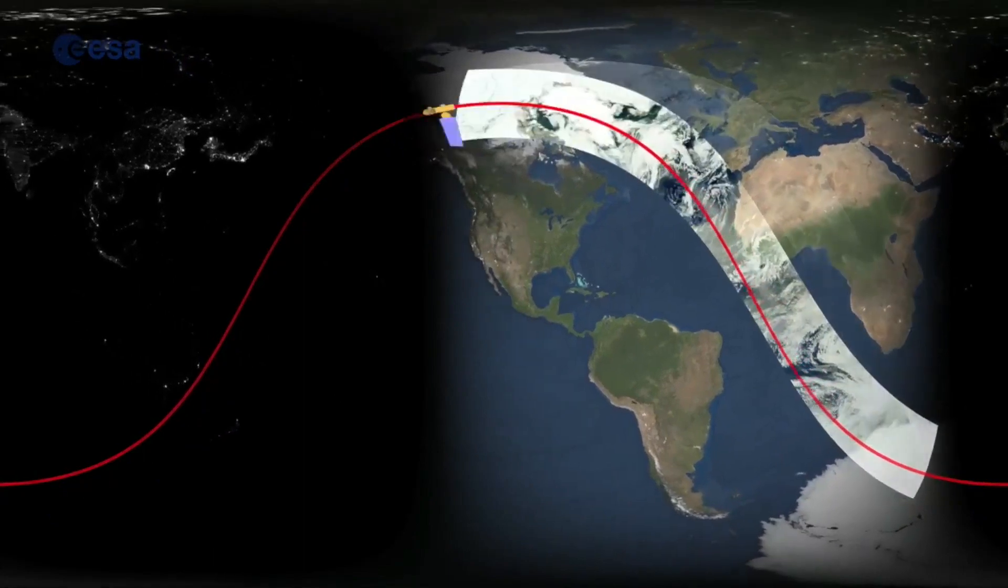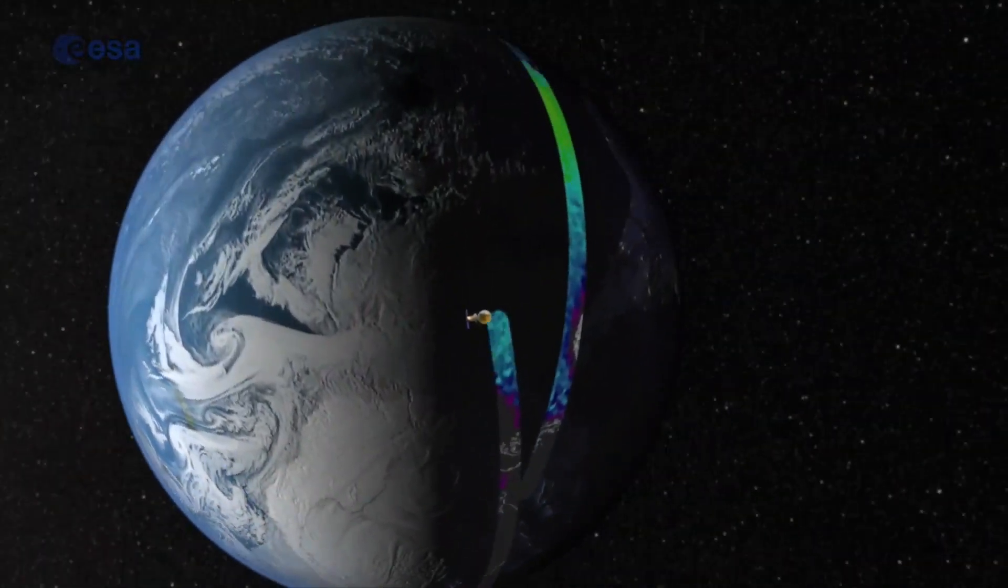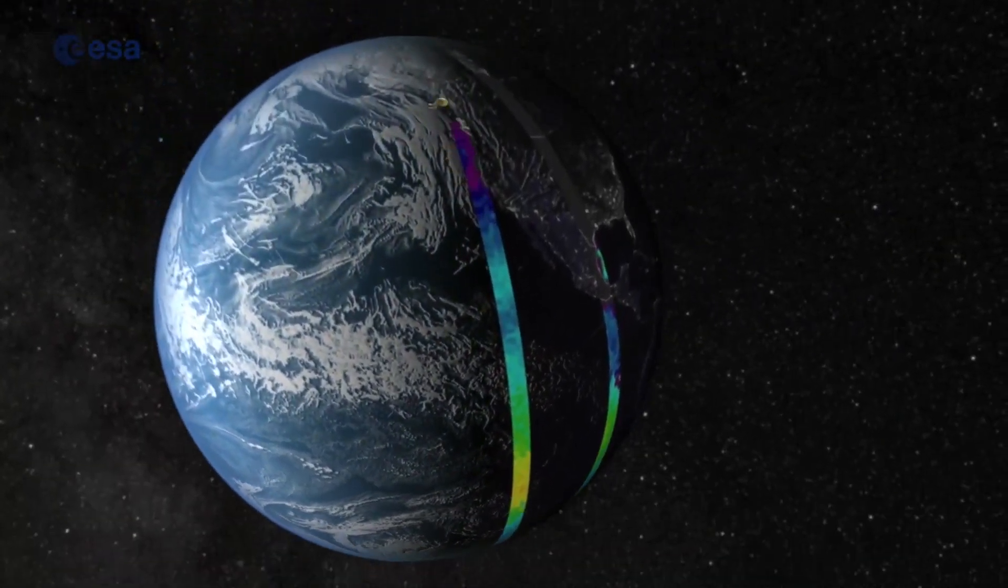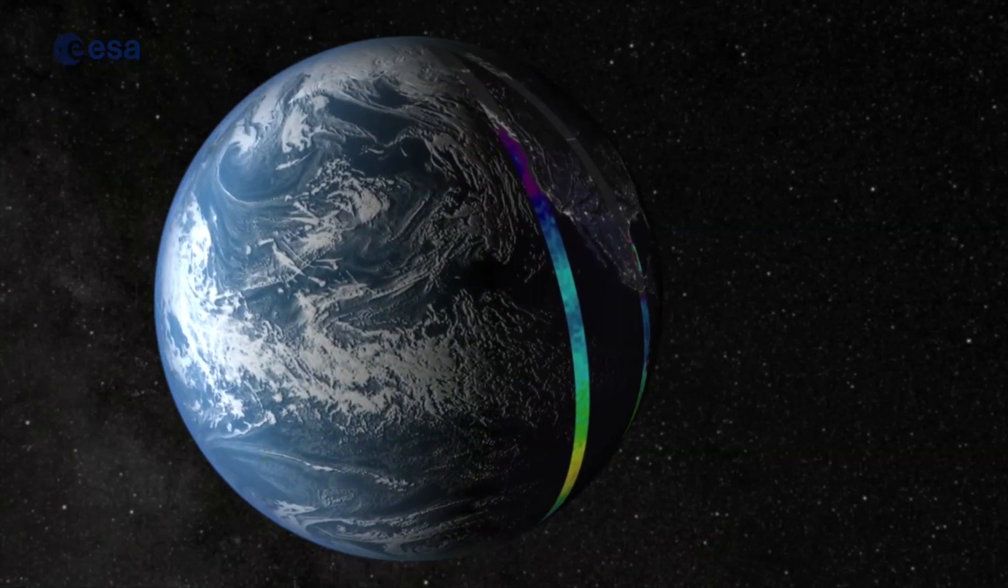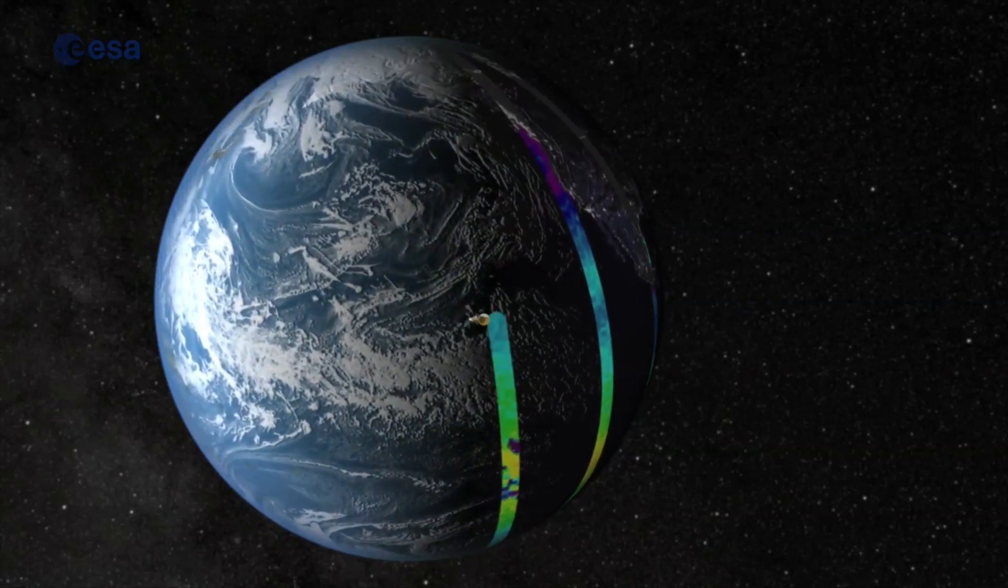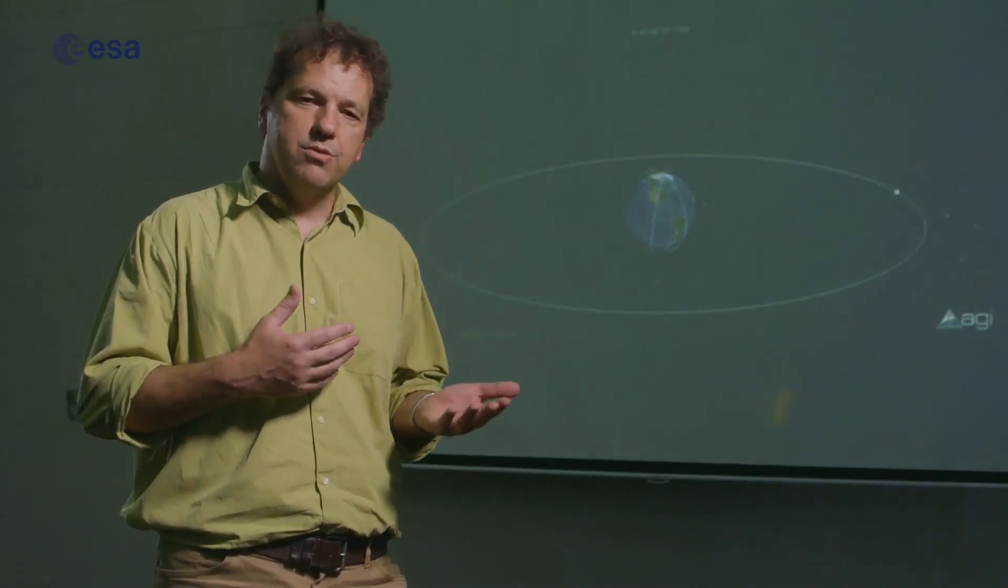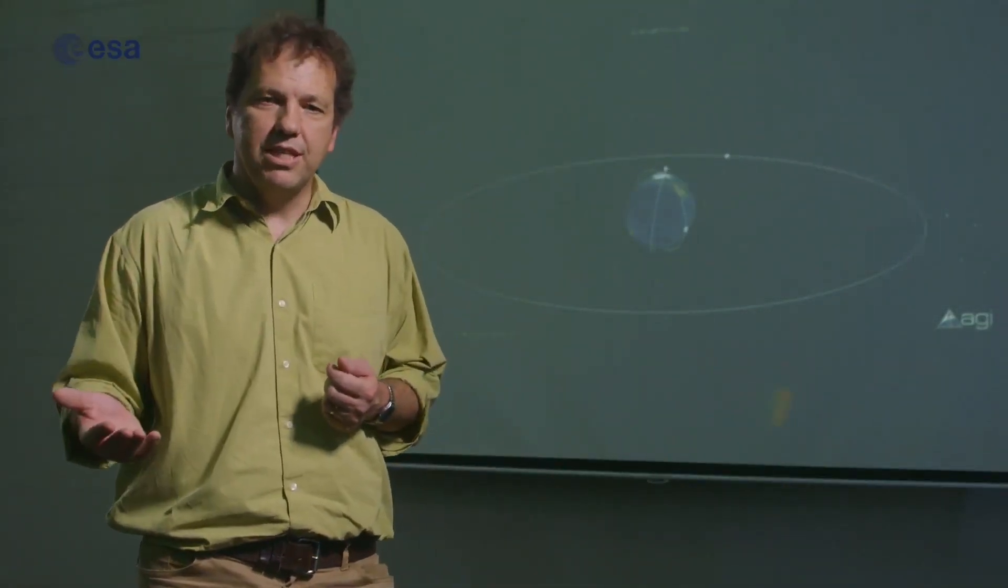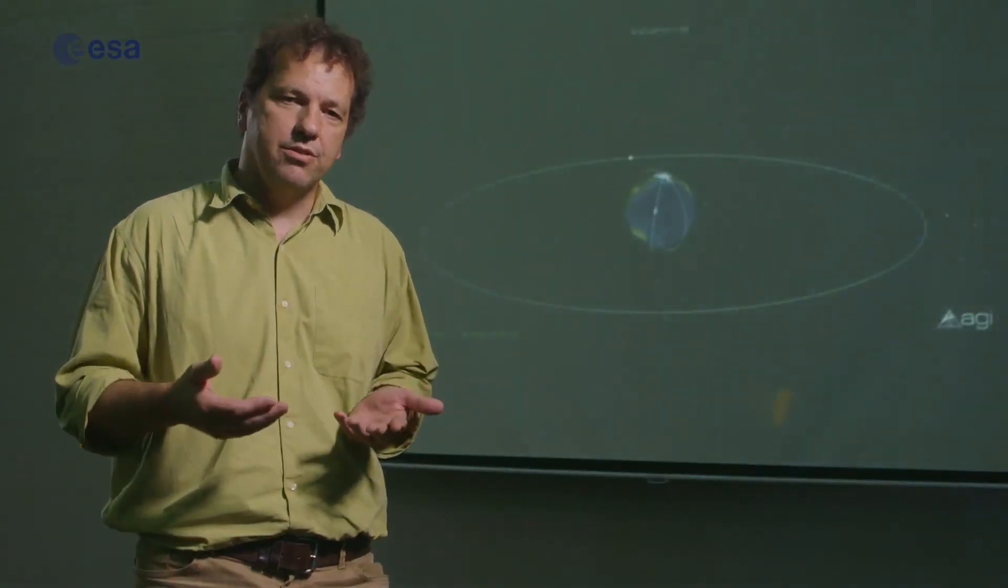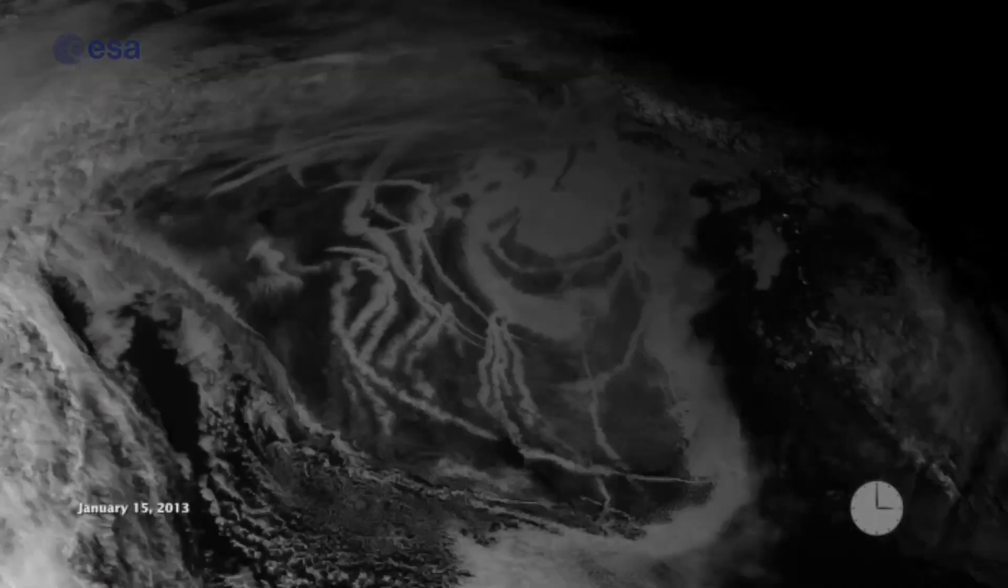Low Earth orbiting satellites are usually placed in something called a sun-synchronous orbit, which means they pass over the Earth at the same local solar time each day, which allows easy comparison between images taken on different dates. If illumination conditions were changing markedly, it would be difficult to tell whether changes you see in the imagery are due to changes on the land surface or changes in the illumination conditions. But using this sun-synchronous orbit, we can much more easily identify changes in the Earth's environment.